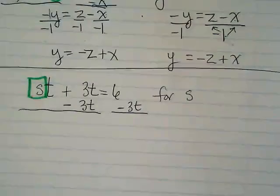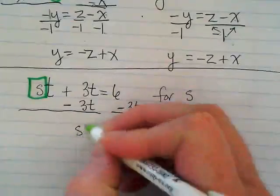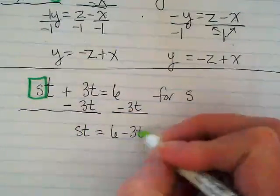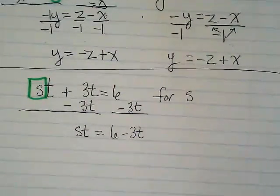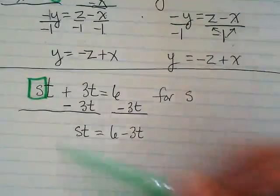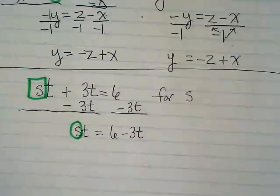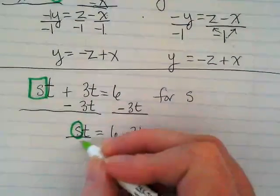That ST we haven't done anything with. We just know we later want to get the S by itself. So it just drops down. ST is now equal to six minus 3T. I'm still looking at this S. I want it alone. What's it with right now? T. What do I need to do with the T then? Divide by T.